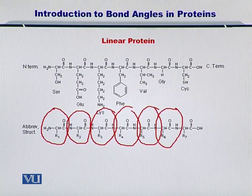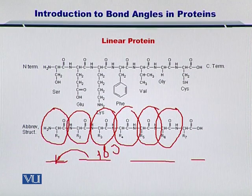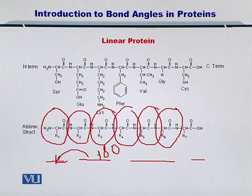Now, if this molecule were to fold, then obviously the angle that exists between these different amino acids, which in its current form is 180 degrees, this angle will change and may get reduced or increased. So, once a protein folds, this linear chain of amino acids and the intuitive 180 degree angle changes to a different value.